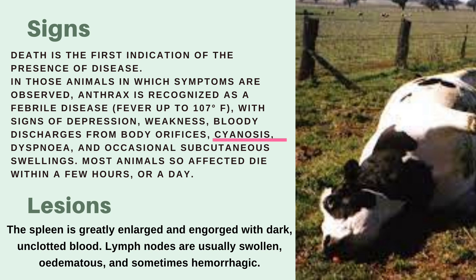Cyanosis is the bluish coloring of skin due to lack of oxygen supply, and dyspnea is labored or heavy breathing. If you find it hard to memorize all these veterinary terminologies, I have made two videos on terminologies so make sure to check them out. As for the lesions, the spleen is greatly enlarged and engorged with dark unclotted blood, the lymph nodes are also swollen, edematous, and sometimes hemorrhagic.